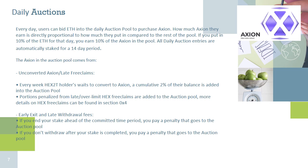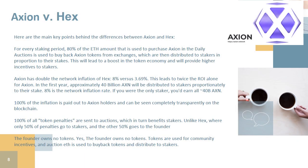First, the ETH is used to purchase the tokens, boosting the token price, and then those tokens are distributed to stakers, creating a very strong positive feedback loop. Here are the main key points behind the differences between Axion and HEX. For every staking period, 80% of the ETH used in the daily auctions is used to buy back Axion tokens from exchanges, which are then distributed to stakers in proportion to their stakes. This will lead to a boost in the token economy and will provide higher incentives to stakers.